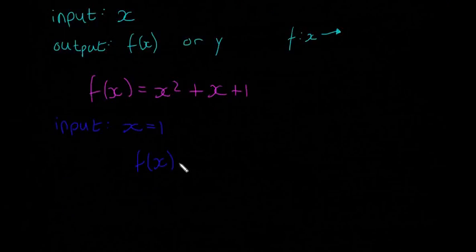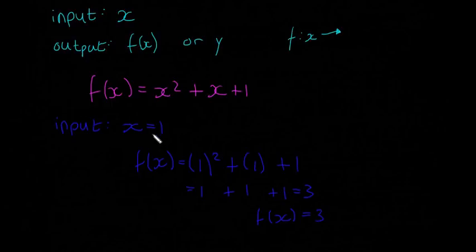So then f(x) is going to be one squared plus one plus one, and that's just going to be one plus one plus one, equals three. So our output then, f(x), is equal to three.